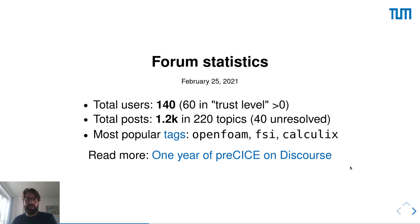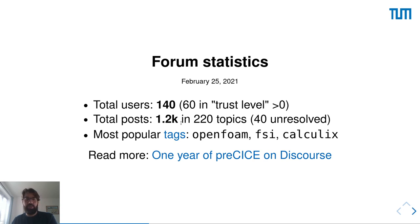Some quick statistics — you can also read about these in the blog post 'One Year of Precise on this Course.' At the moment we have 140 users, not so many very active, and we have passed 1000 posts since one year and a few months. Of 220 topics, 40 are unresolved. The most common topics are about OpenFOAM, FSI, and Calculix, as expected.